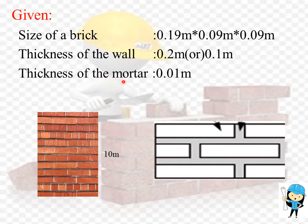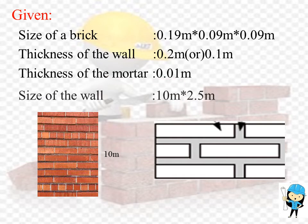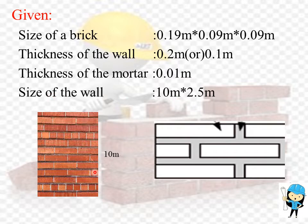The thickness of the mortar is taken as 0.01 meter. Here we take the size of the wall as 10 meter x 2.5 meter. Now we are going to calculate the number of bricks required to build the wall. The mortar is 10 mm.